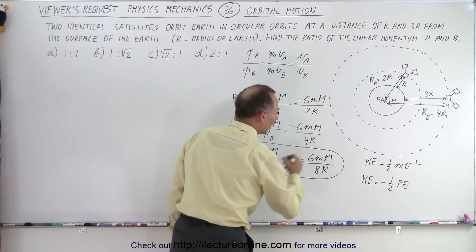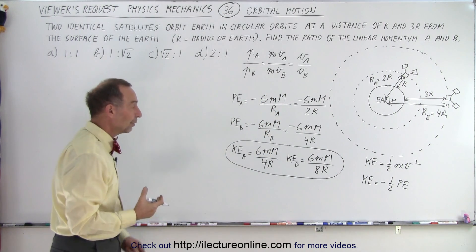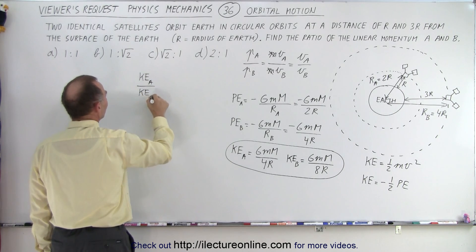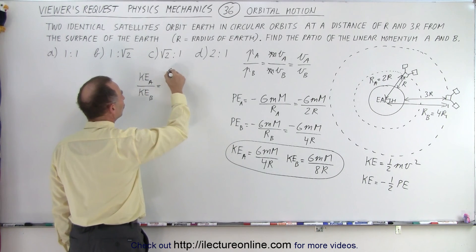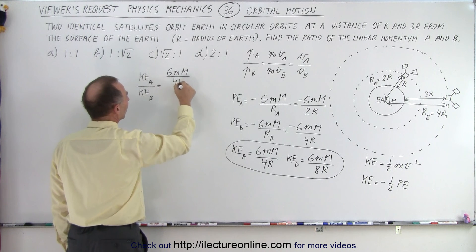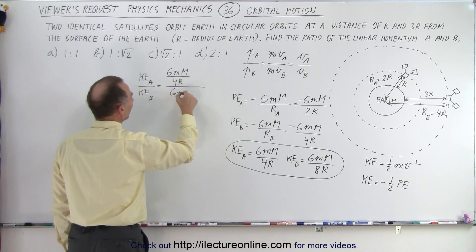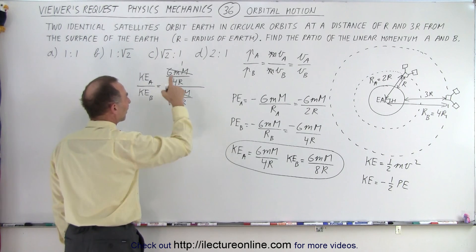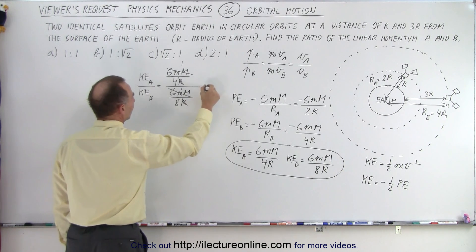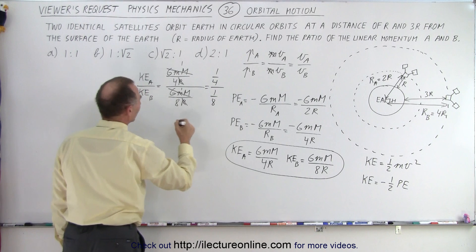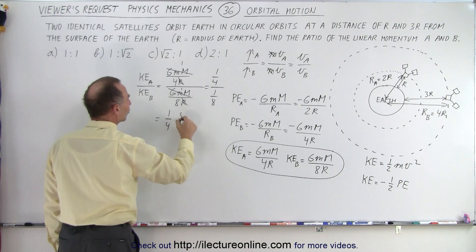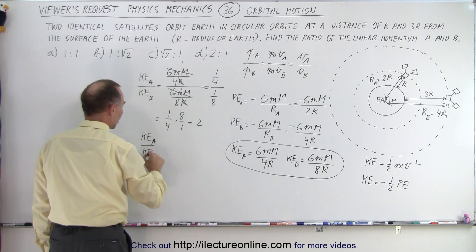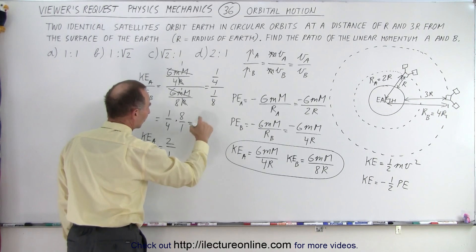Now we have the kinetic energy of both satellites. The ratio of kinetic energy of A to kinetic energy of B is (GmM/4R) divided by (GmM/8R). The GmM cancels out, the R's cancel out, leaving 1/4 divided by 1/8, which equals 1/4 times 8, which is 2. So the ratio of kinetic energy of A to kinetic energy of B is 2 to 1.